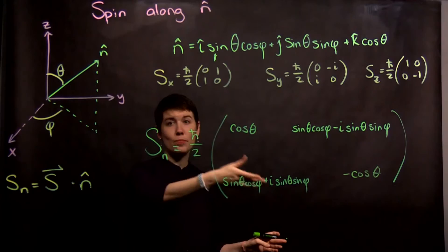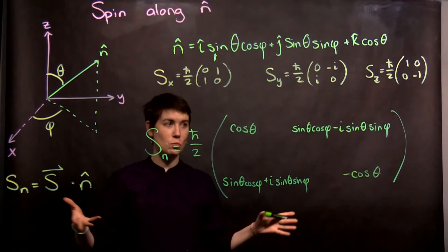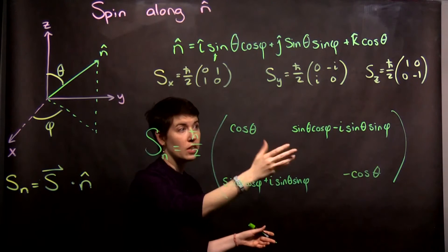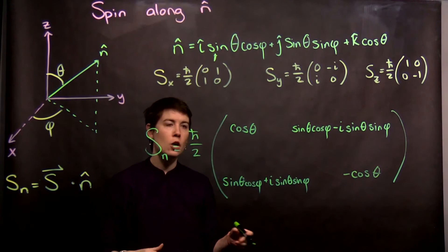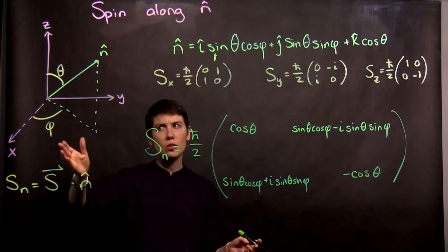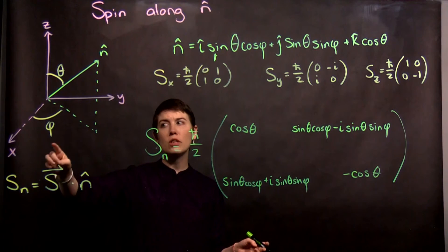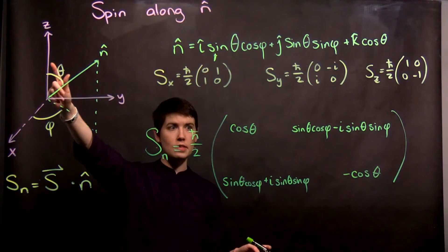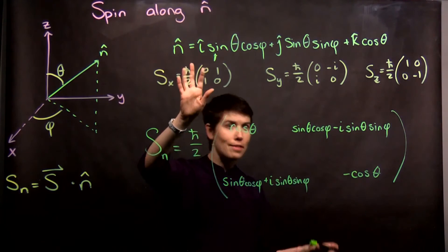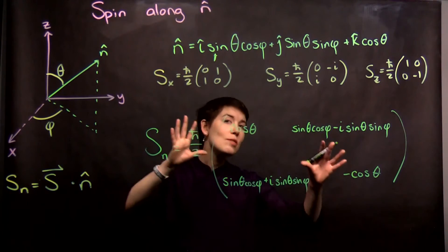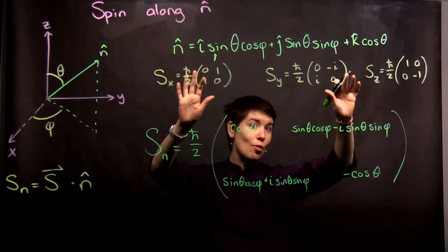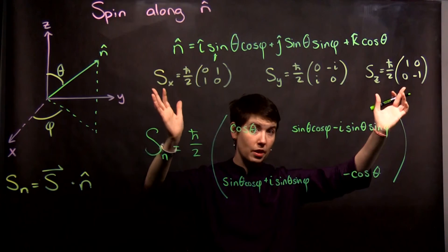So now this is my general spin in a general direction, which we define in terms of theta and phi. If you wanted to, you could do a quick check and plug in specific values of theta and phi that would give you back the x, y, and z matrices. This is the most generalized form, and those are specific forms for very specific choices of theta and phi.